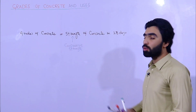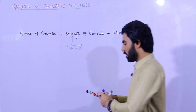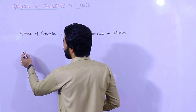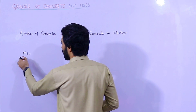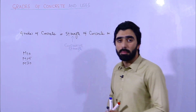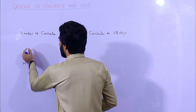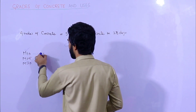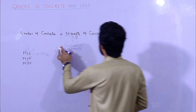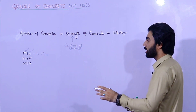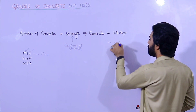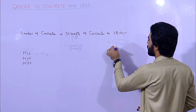So what is the strength of concrete in 28 days? When you see a grade of concrete, you will find the letter 'M' — for example M10, M15, M20, etc. M stands for Mix, and the number represents the compressive strength. So M10 means the compressive strength of concrete after 28 days is 10 Newton per mm².